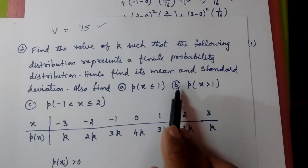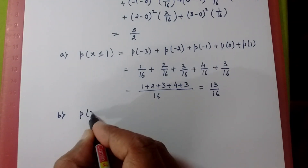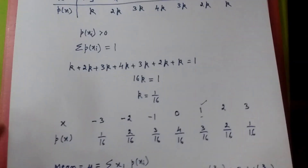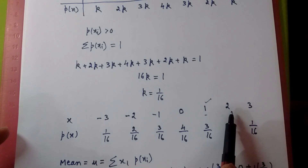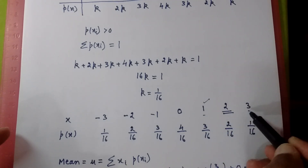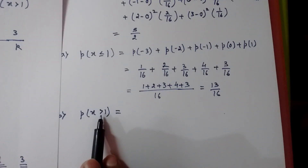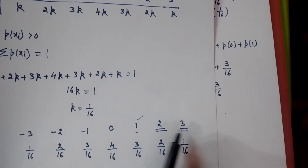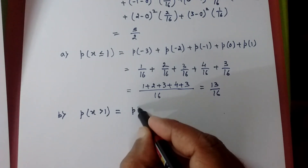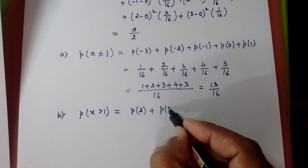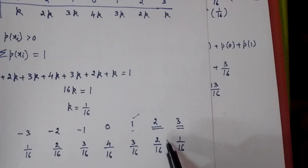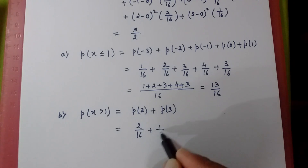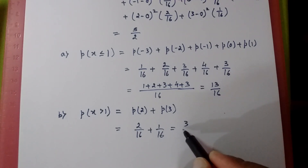For P of X greater than 1, we take only values strictly greater than 1, which are 2 and 3. So it is P(2) plus P(3), which equals 2/16 plus 3/16, giving P of X greater than 1 equals 5 by 16.